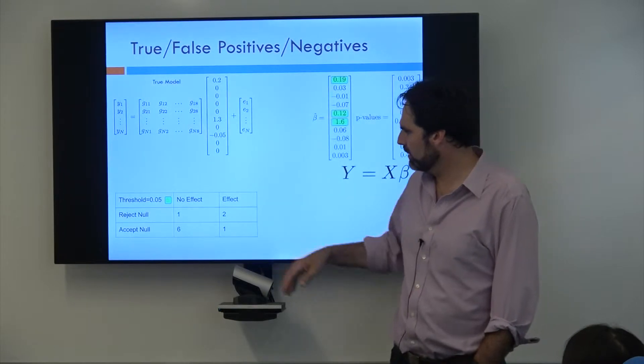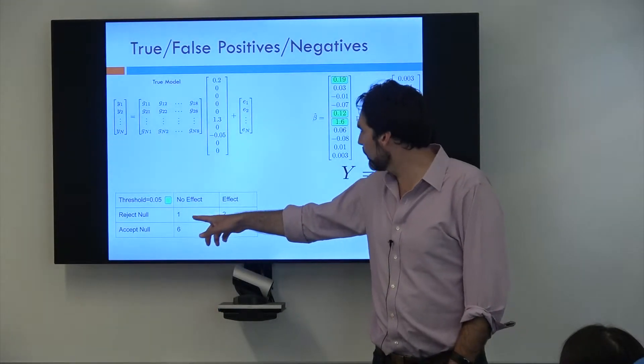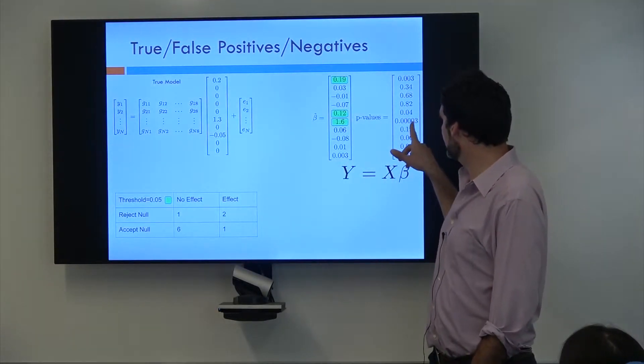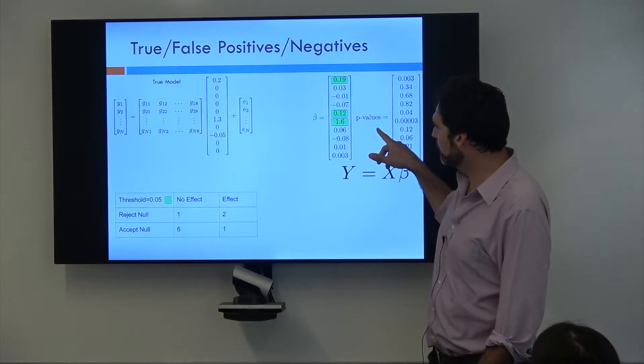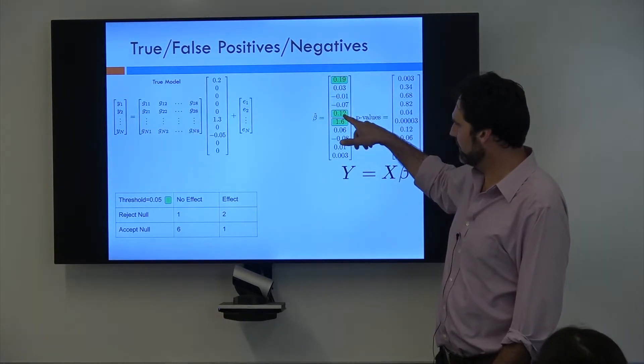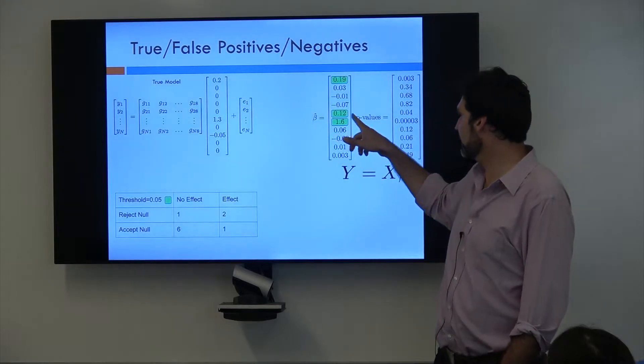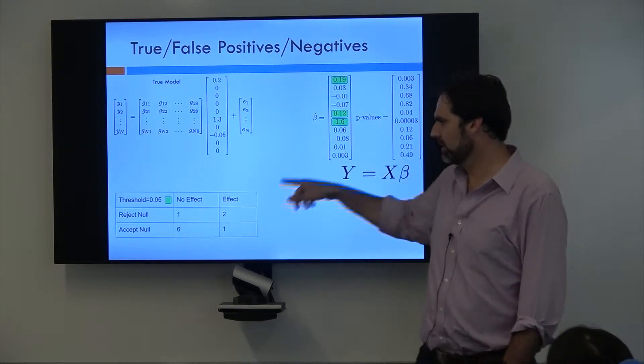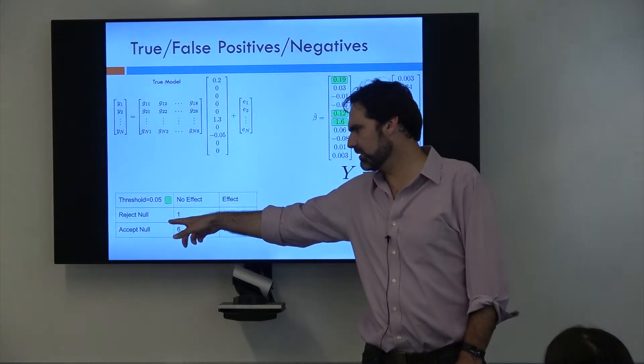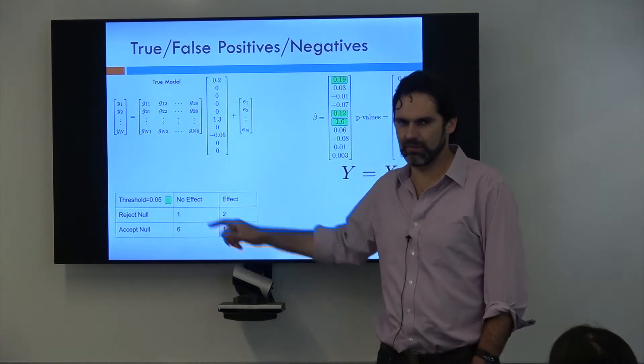So if we do that, it turns out that for one of these guys, this guy, it turns out that the true effect is 0. But due to random chance, we rejected the null. So this is a false positive. So we rejected a null even when the truth is there was no effect.